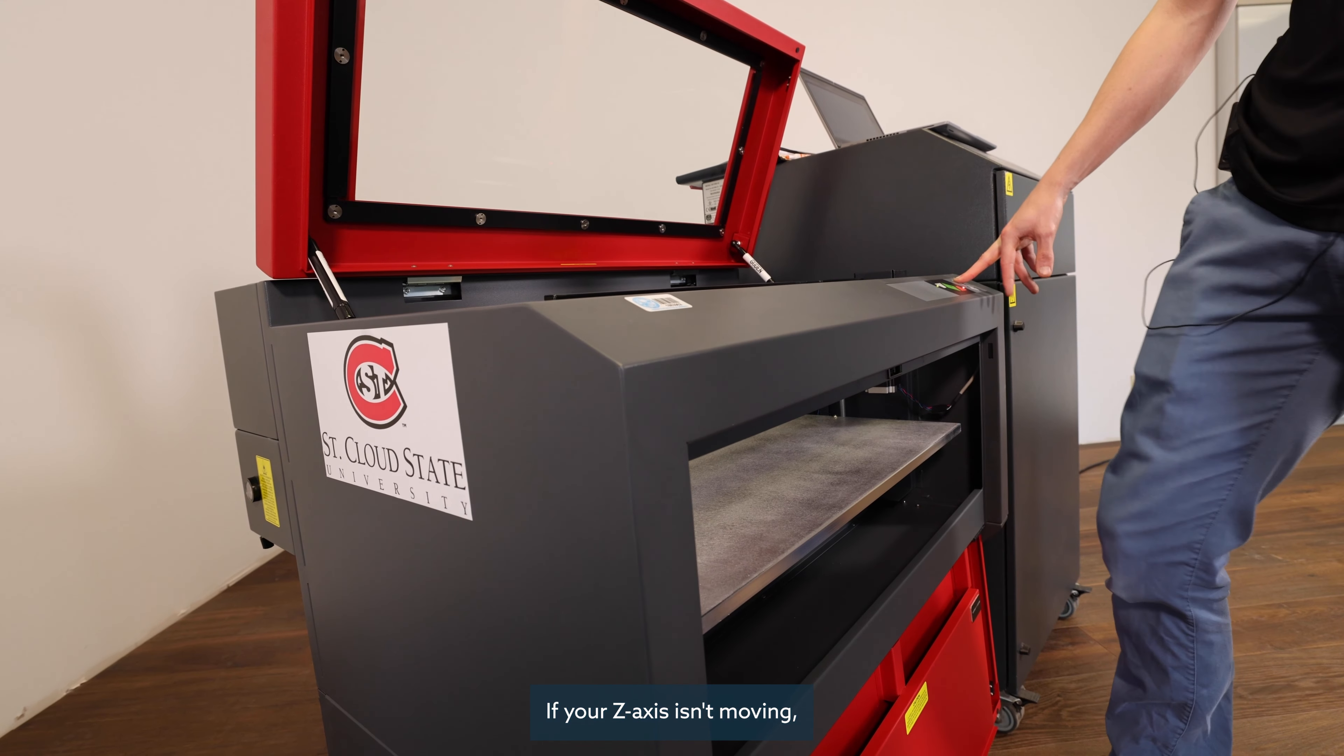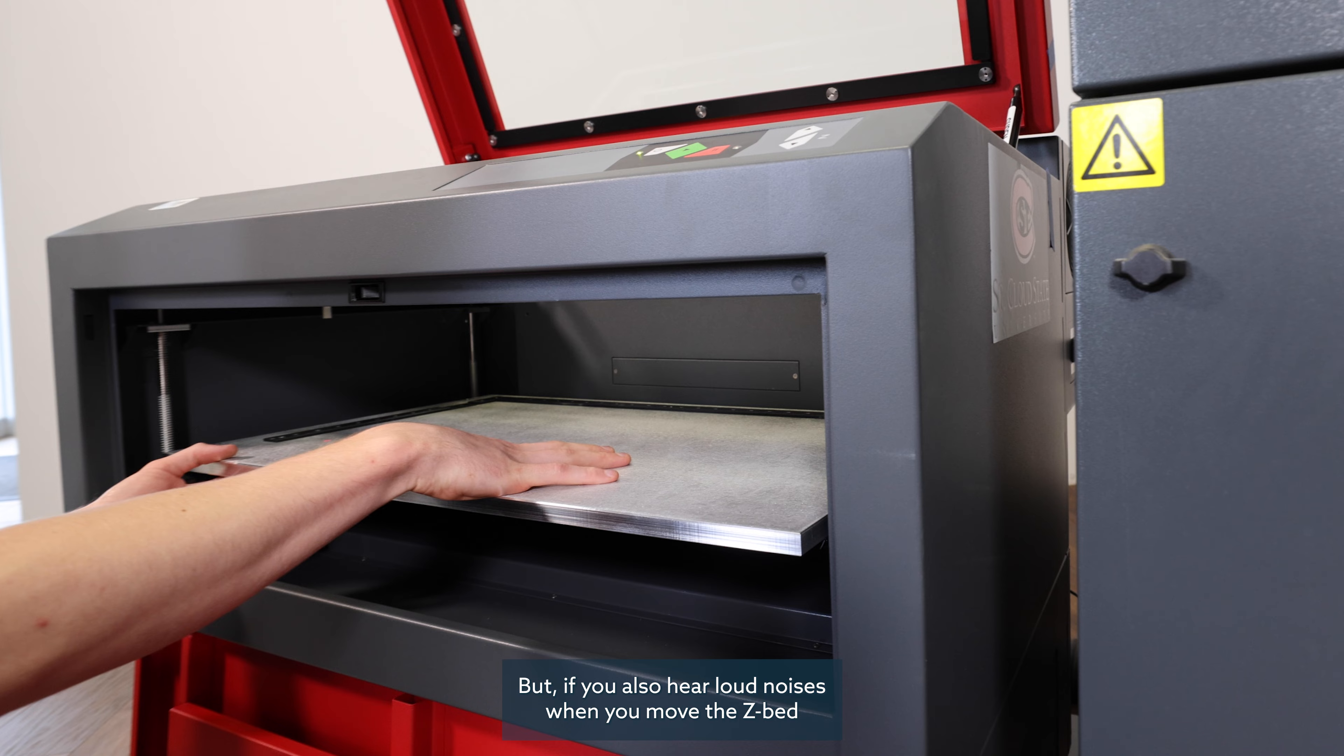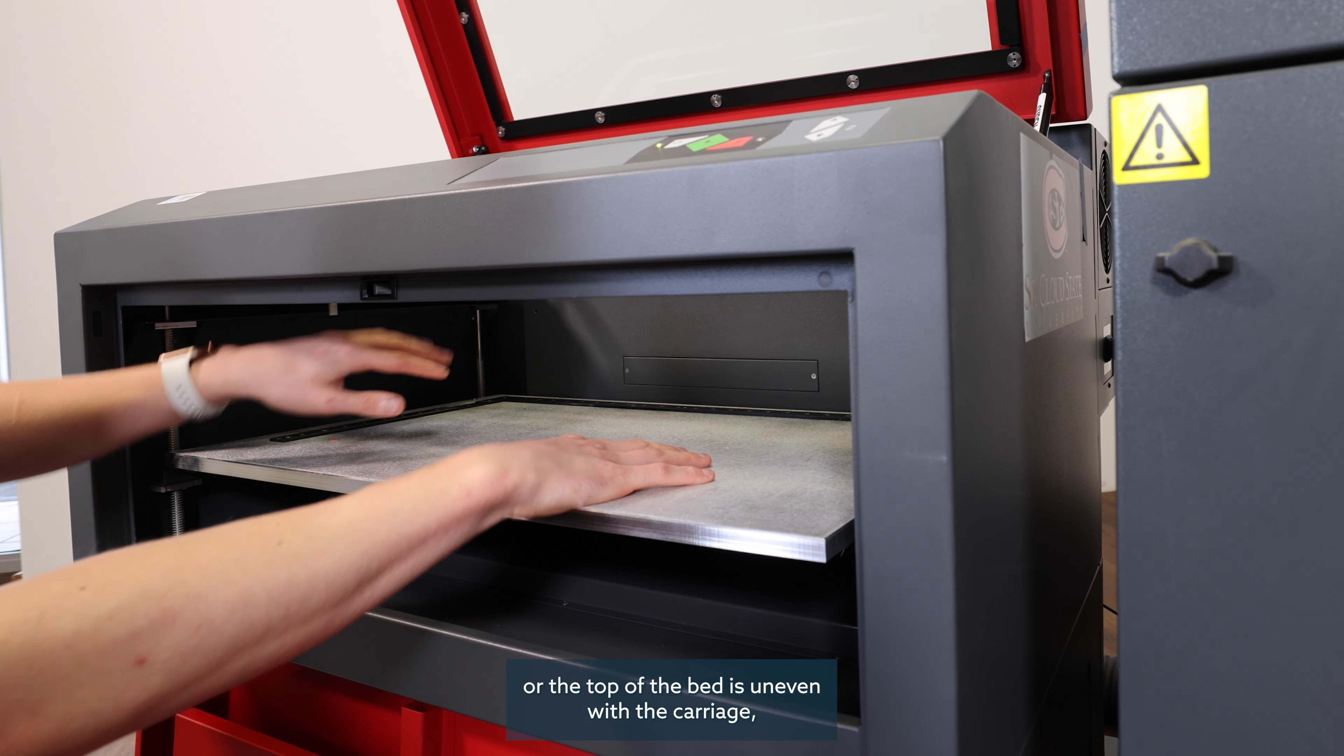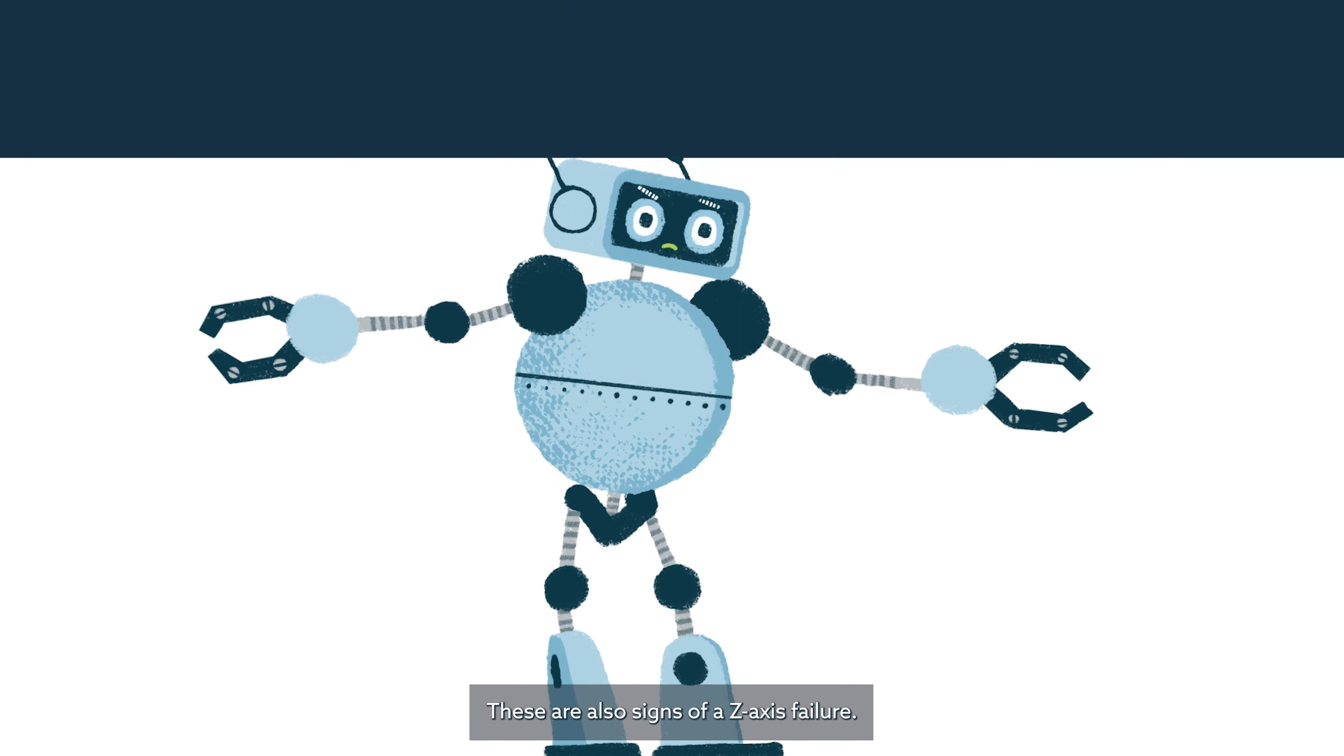If your Z-axis isn't moving, that's an obvious sign of a Z-axis issue. But if you also hear loud noises when you move the Z bed, or the top of the bed is uneven with the carriage, these are also signs of a Z-axis failure.